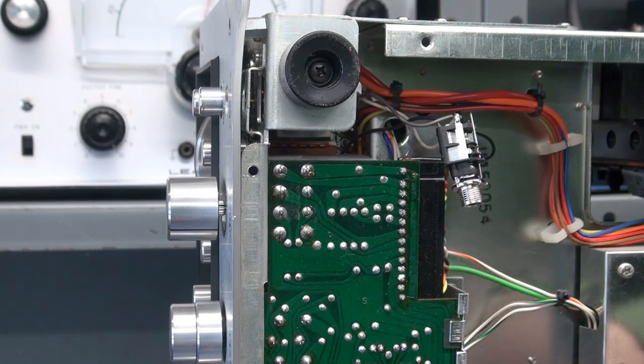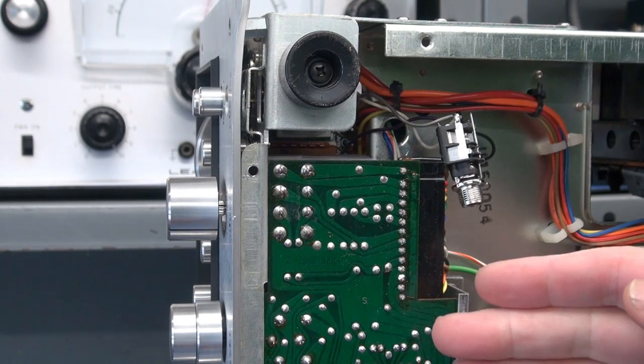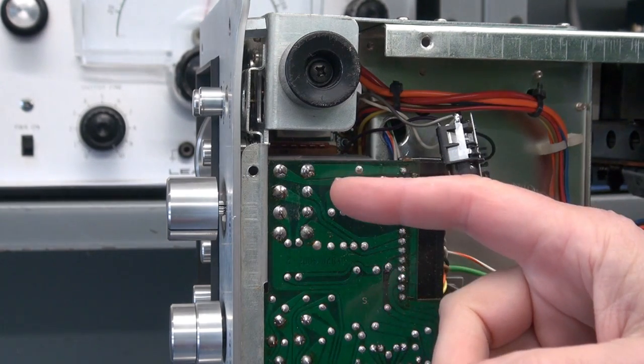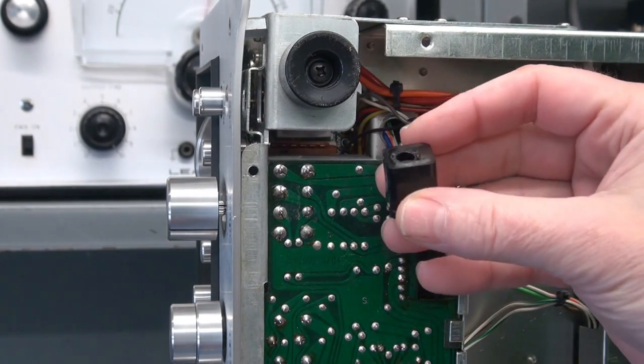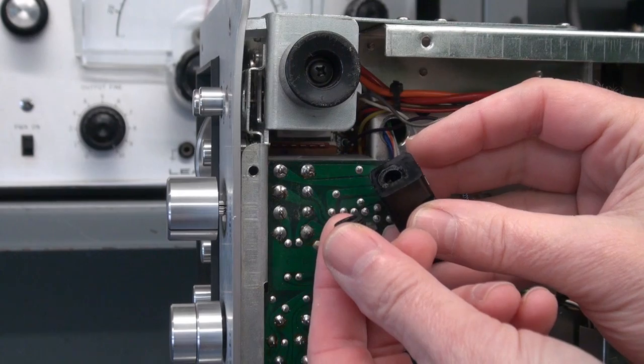Okay, here's the situation. This is a Marantz Model 2325. It came in with shipping damage, so the front panel was bent in. When that happened, it broke the headphone jack.